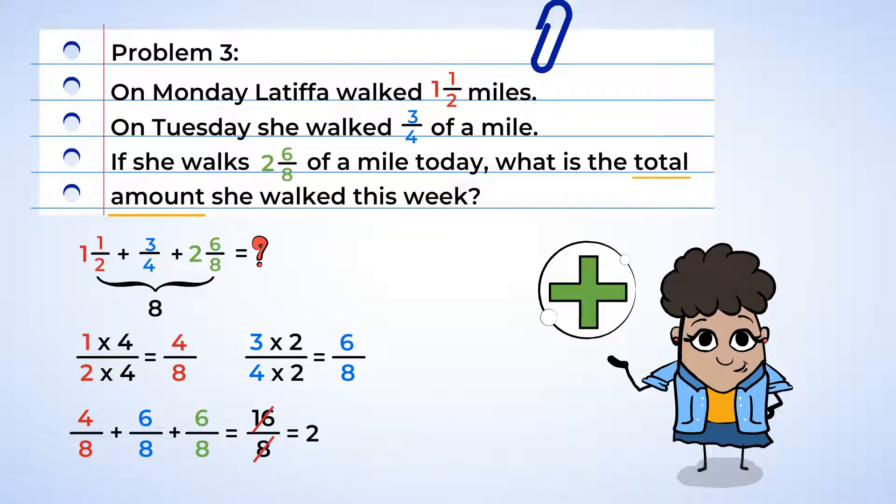And finally we're going to sum up the whole numbers. 1 plus 2 equals 3, and we have another 2 from the improper fraction, which will give us a total of 5. Latifah walked 5 miles this week. Good workout!